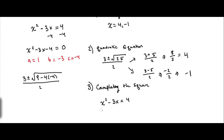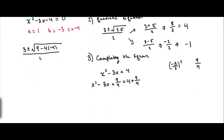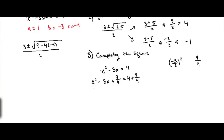Completing the square really relies on your linear coefficient. So let's write our equation out: x squared minus 3x is equal to 4. We need to first identify our linear coefficient, which is negative 3 — because just x would be linear. So we're going to take half our linear coefficient and square it, then add it to both sides. This is negative 3 over 2, squared, which gives positive 9 over 4. So we're adding 9 fourths to both sides.